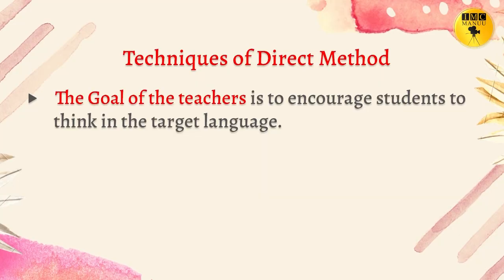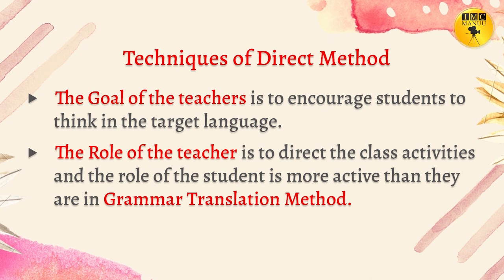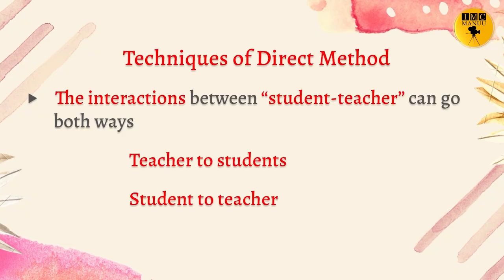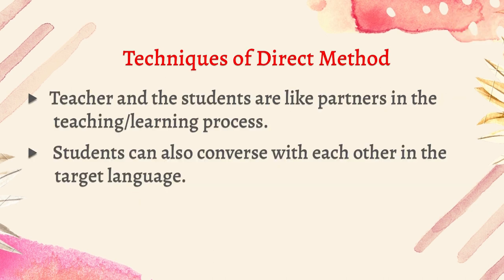What is the goal of the teacher in the Direct Method? The goal is to encourage students to think in the target language at all times — there is no scope for the mother tongue. The role of the teacher is to direct class activities, and the role of the student is more active than in Grammar Translation Method. Interactions can go both ways — teacher to student and student to teacher. Teacher and students are like partners in the teaching and learning process. Students can also converse with each other in the target language, developing their communication skills and overcoming fear and hesitation.